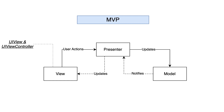Now let's address an issue introduced by the MVP pattern: assembling the dependency graph. Since MVP has three separate layers and we don't want the view to have knowledge of the model, it's not appropriate to perform assembly within the view controller. We need to handle assemblies somewhere else. One approach is to use a separate assembly class, or introduce a router responsible for assembling and routing between screens in the app.